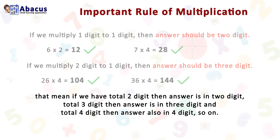That means: if the total number of digits is 2, the answer is in two digits; if the total is 3, the answer is in three digits; if the total is 4, the answer is in four digits; and so on.